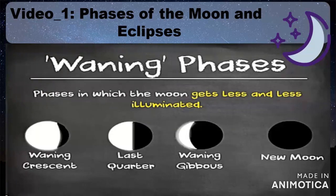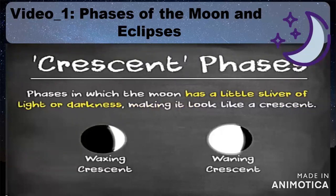Waning phases are phases in which the moon gets less and less illuminated. The waning phases are: waning crescent, last quarter, waning gibbous, and new moon. Crescent phases are phases in which the moon has a little sliver of light or darkness making it look like a crescent, and the crescent phase comes in two forms: waxing and waning.